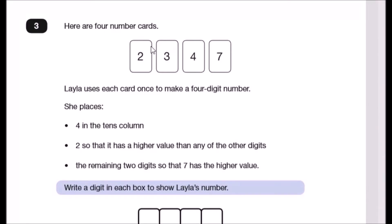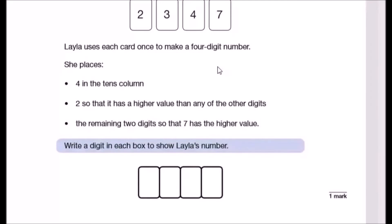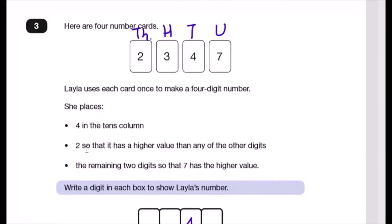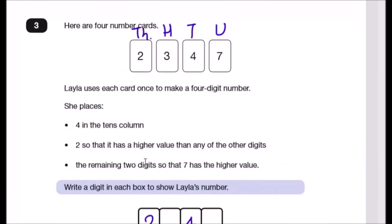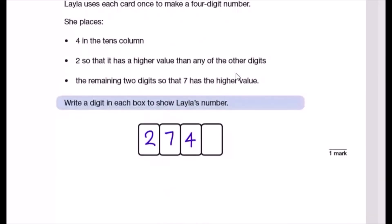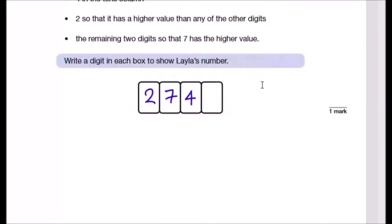Number three: Here are four number cards: 2, 3, 4, and 7. Layla uses each card once to make a four-digit number. She places 4 in the tens column, so 4 goes here. She places 2 so that it has a higher value than any of the other digits, so the highest value 2 could be is in the thousands column. She places the remaining two digits so that 7 has the higher value. If 7 has a higher value of the two, it has to be the hundreds, meaning the final digit is going to be 3. She just swapped the 3 and the 7 around.